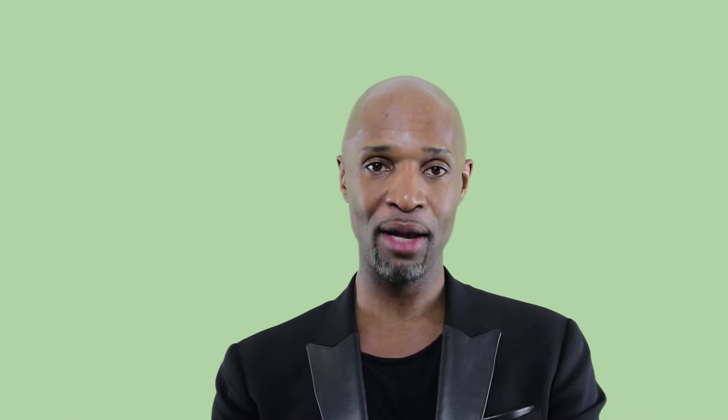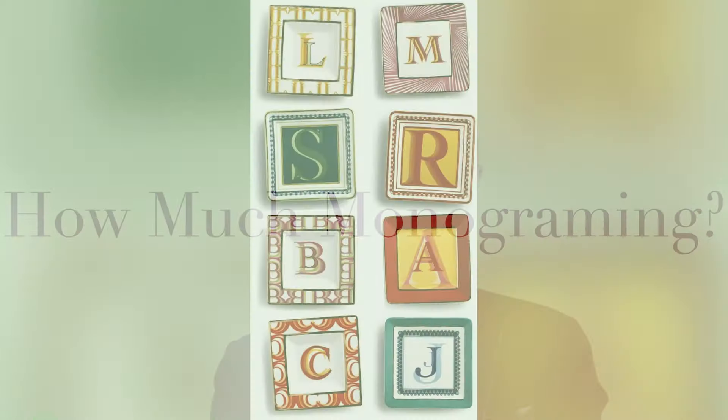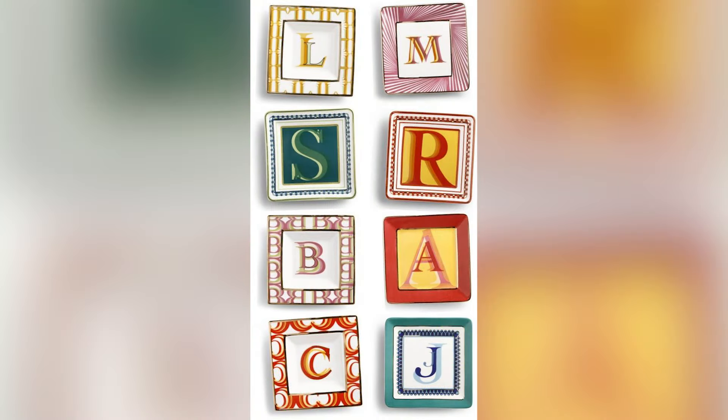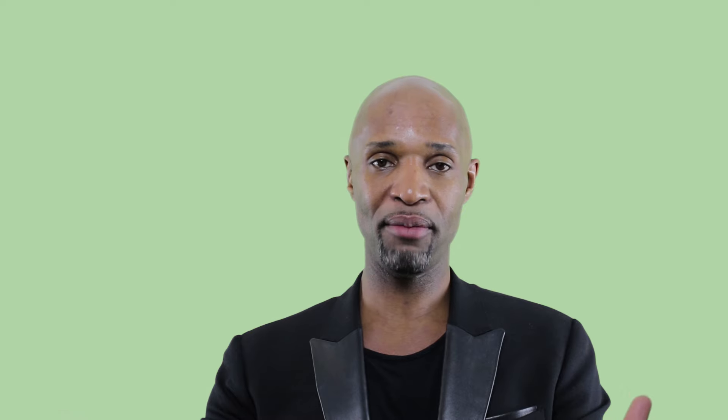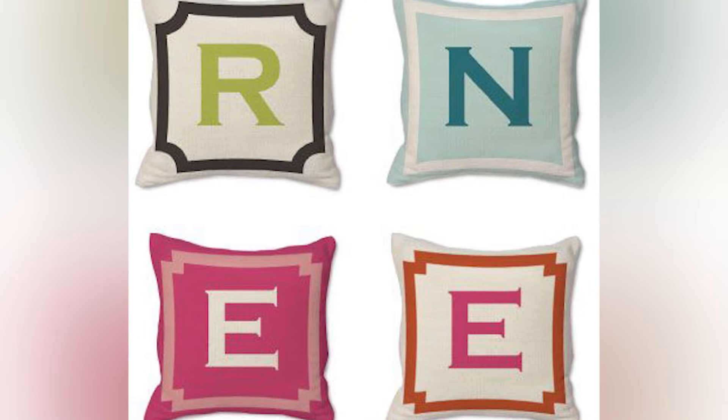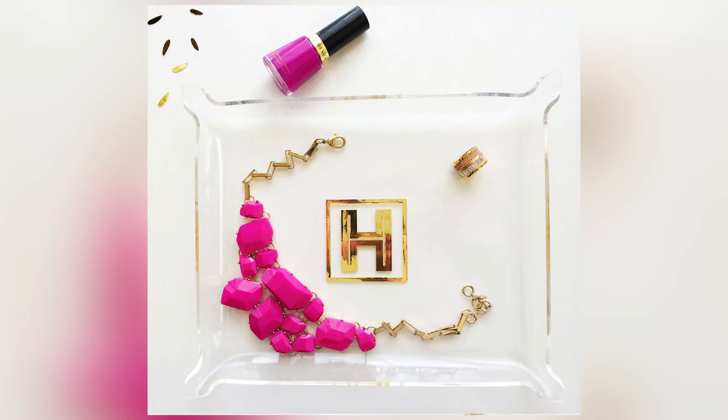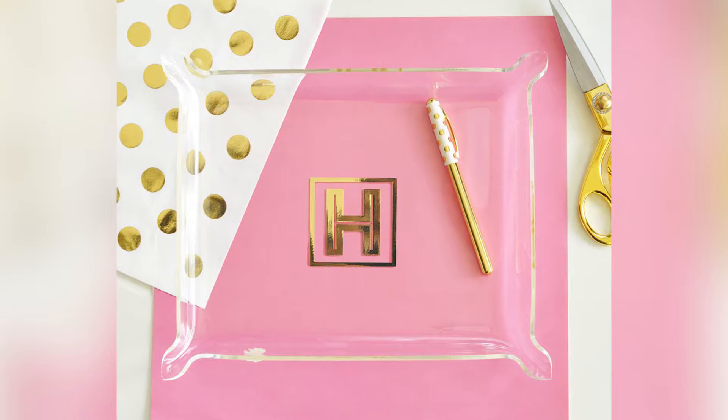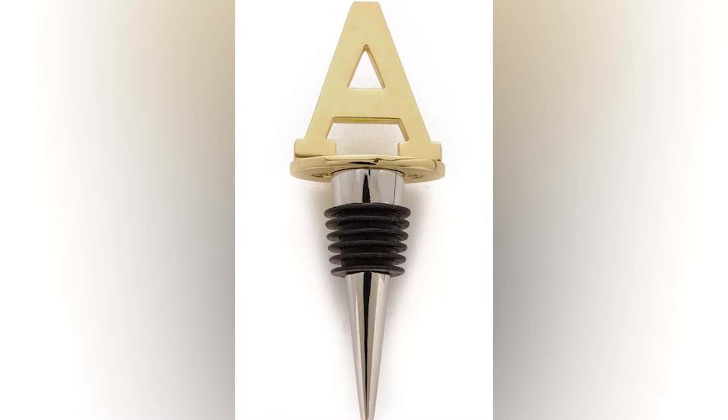The question you should be asking yourself is: how far do I want to go with monogramming? Is it one item? Multiple? Five or six? It's really important to understand your level of commitment to monogramming. I would say subtle is better — less is more. Start with one to two items and start with your initials versus your full monogram. If you do it small, strategically, and in a visible place, you'll not only appreciate it, but your guests will appreciate it too.